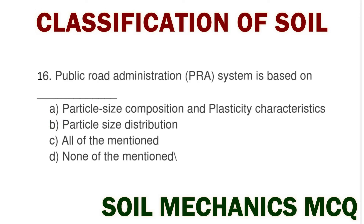Next question: the Public Road Administration (PRA) system is based on option A particle size composition and plasticity characteristics, option B particle size distribution, option C all of mentioned, option D none of mentioned. The correct answer is option A particle size composition and plasticity characteristics.